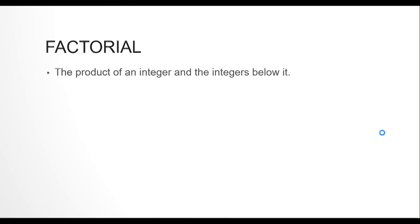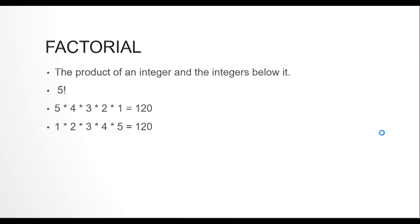First of all, what is a factorial? A factorial is a product of an integer and all the integers below it. So if I say 5 factorial, what I mean is 5 × 4 × 3 × 2 × 1, which is 120. Or we can say 1 × 2 × 3 × 4 × 5 — it's the same. We are just doing multiplication of integers below the given integer up till 1, either way.